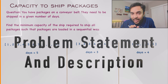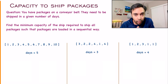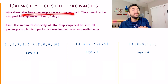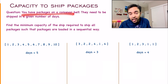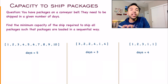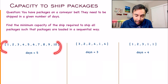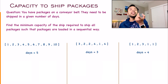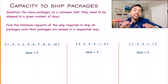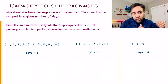First of all, let's make sure that we are understanding all of the available components in the problem. Over here, you are given some packages on a conveyor belt and you have to ship all of them in a given number of days. So that is your input — you are given all of these packages and then you are given a certain number of days. Now, the constraint of the problem is that all of these packages are coming in a sequential manner.